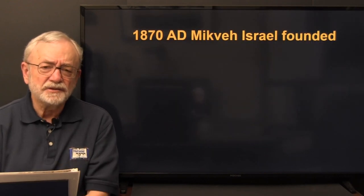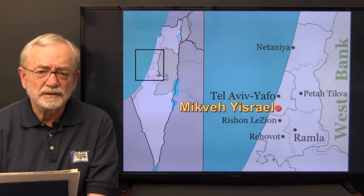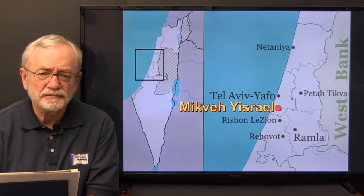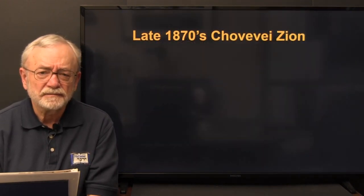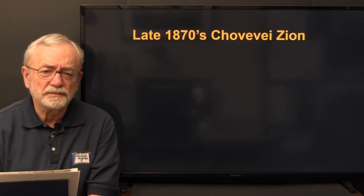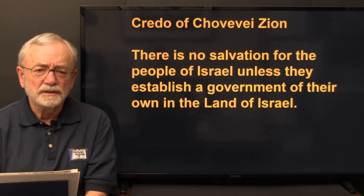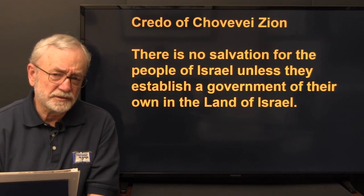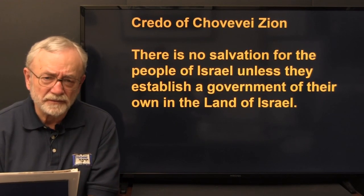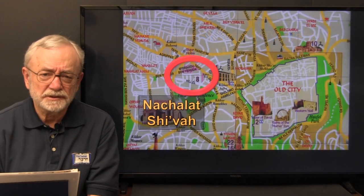In 1870, Mikveh Yisrael was founded on the coast as a farming community. In the late 1870s, Chovevei Tzion groups were functioning by the hundreds in Russia. Their credo: there is no salvation for the people of Israel unless they establish a government of their own in the land of Israel. In 1874, Mea Sharim — 100 gates — was purchased, the second independent territory outside the old city of Jerusalem.